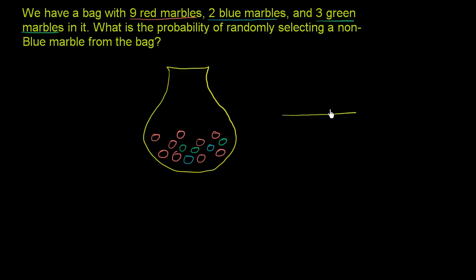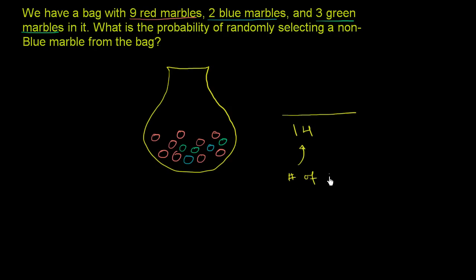So let's think about all of the possible events first. How many different possible marbles can we take out? Well, that's just the total number of marbles there are. So there are 1, 2, 3, 4, 5, 6, 7, 8, 9, 10, 11, 12, 13, 14 possible marbles. So this is the number of possibilities.